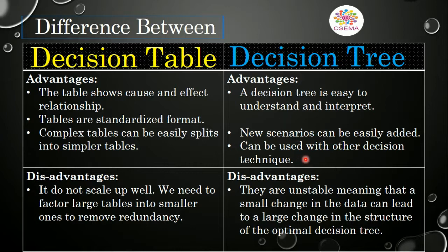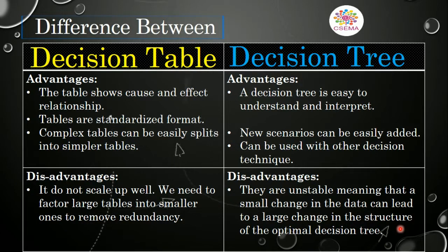Comparing the disadvantages: the decision table does not scale up well — large tables need to be factored into smaller ones to remove redundancy, meaning decision tables suffer from redundancy problems when the table is huge. Decision trees are unstable, meaning a small change in data can lead to a large change in the whole structure of the tree.